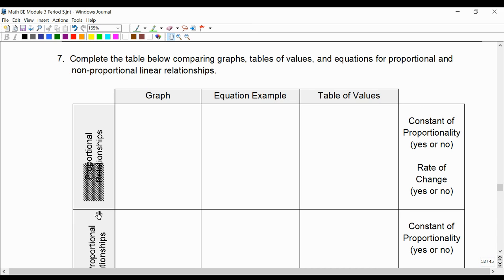On number seven, we're going to fill out a table summarizing really the bulk of module three, not just this new section. We're going to first discuss or fill out what does a proportional relationship look like or what are the qualities with a graph.